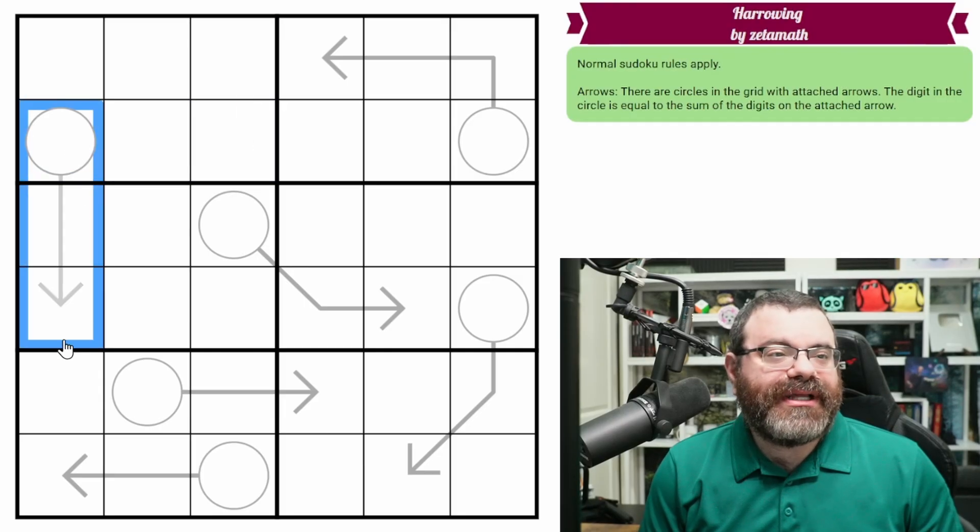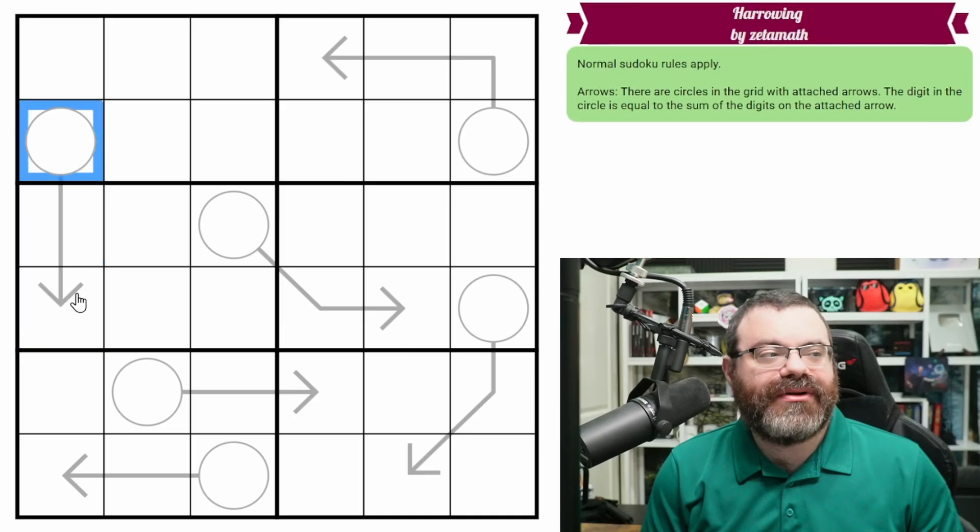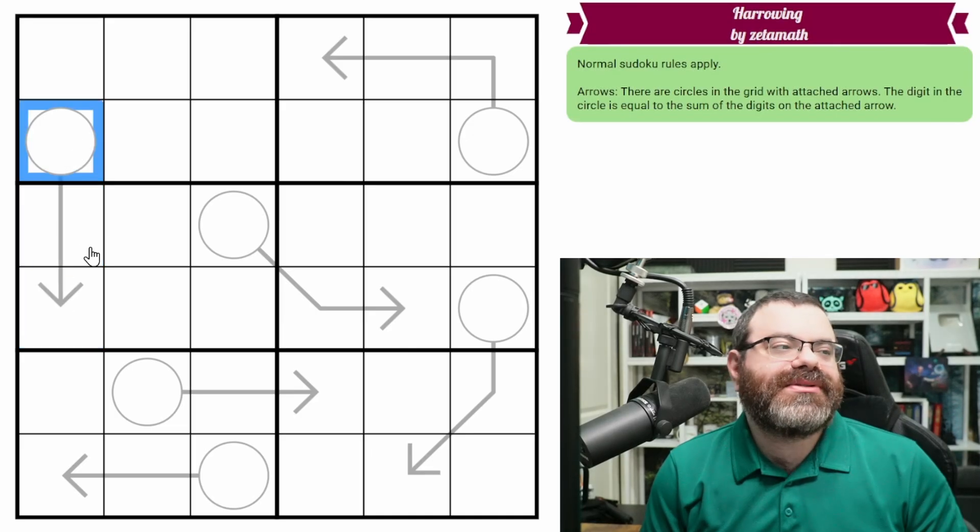We also have arrows in the grid. That's our only constraint. The arrows are always attached to a circle. Whatever digits go on the arrow, you sum them up, that's the digit that goes in the circle.